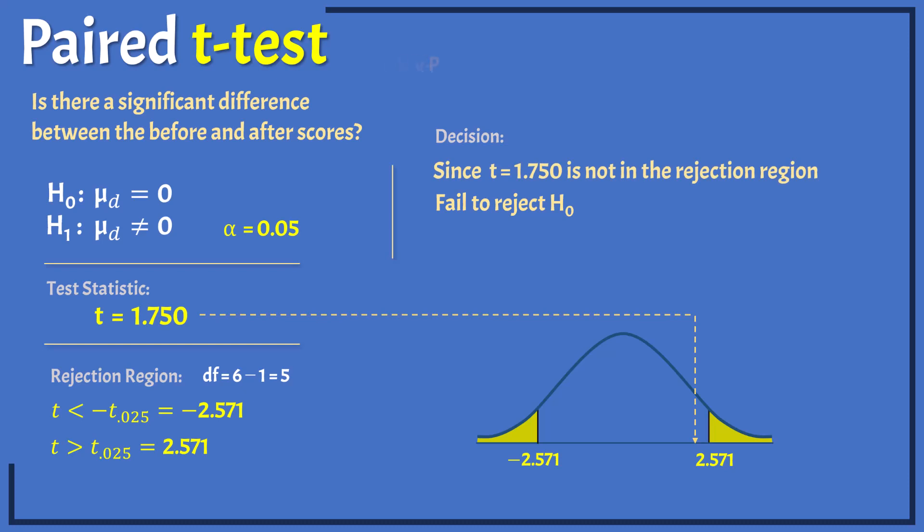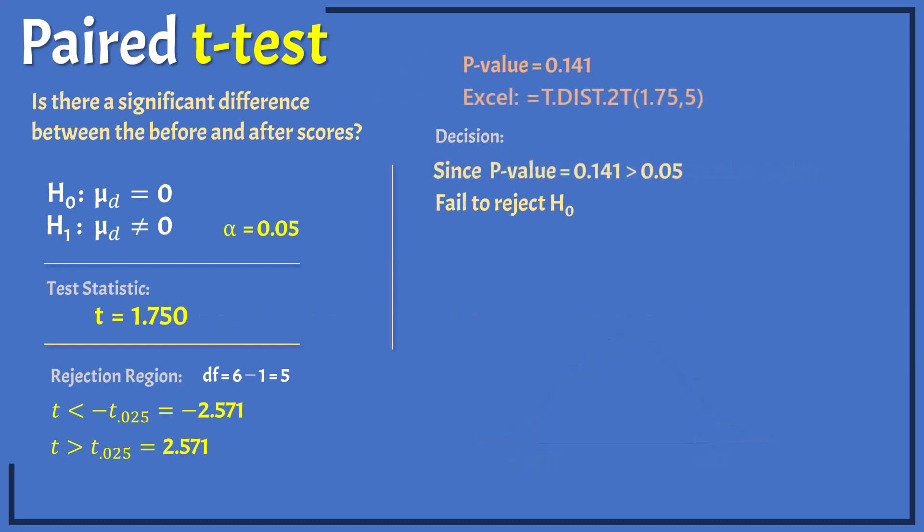Using software, we also find the p-value to be 0.141, which is greater than our significance level alpha of 0.05. As a result, we fail to reject the null hypothesis. Consequently, we have insufficient evidence to conclude that a significant difference exists between the before and after scores.